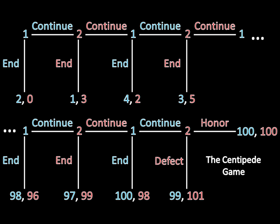This is a commitment problem. If the players could credibly commit to continuing throughout the game, we'd reach the outcome where both players earn 100 — much better for both players. Compare that to the equilibrium where player 1 gets 2 and player 2 gets 0. Those are much smaller figures than what happens if we could come up with a way of continuing all the way through and splitting $200 evenly 50-50.